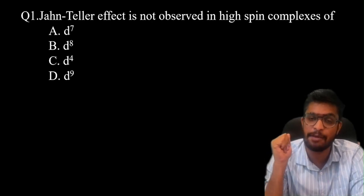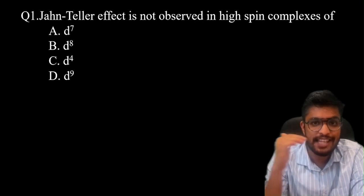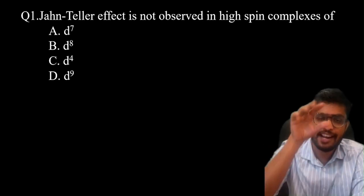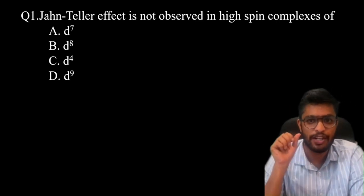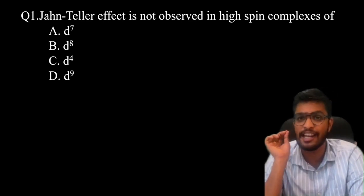Symmetrical arrangements. D3, d5, and d8 configurations - T2G6, EG2 - show no Jahn-Teller effect.